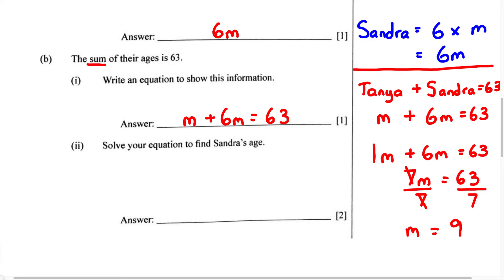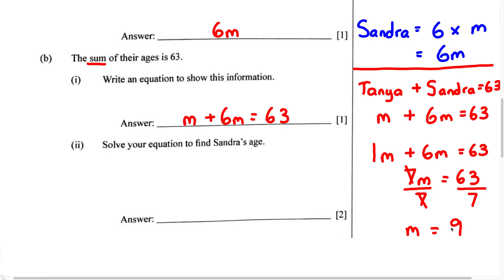We automatically know that because 7 times 9 equals 63. So it is very important that you memorize and know your times table — it's going to save you a whole lot of time. Now once we have M equals 9, we know M is Tanya's age. Therefore, we can say Tanya is 9 years old. But for part 2, it says solve your equation to find Sandra's age. To find Sandra's age, we know Sandra is 6 times M, which is 6M. Therefore, we're going to multiply 9 by 6. Sandra is 6M, or 6 multiplied by M, and in this question M equals 9.